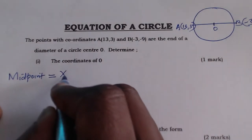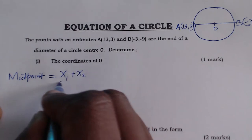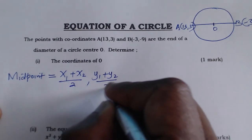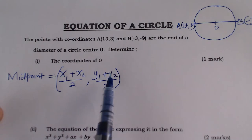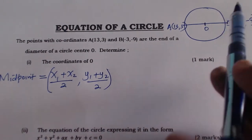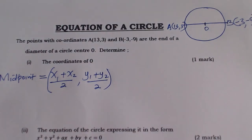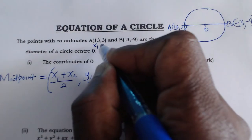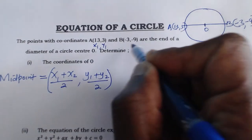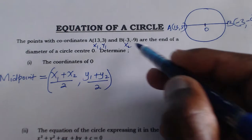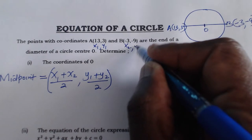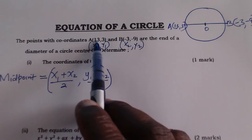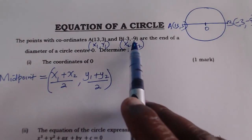The midpoint is given by: x = (x1 + x2) / 2, y = (y1 + y2) / 2. This is how we get the midpoint when given the coordinates of the endpoints of any straight line. In this case: x1 = 13, y1 = 3, x2 = -3, y2 = -9. We now substitute these values into the formula.